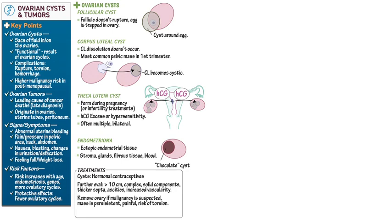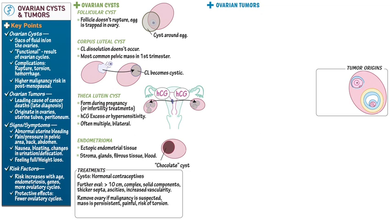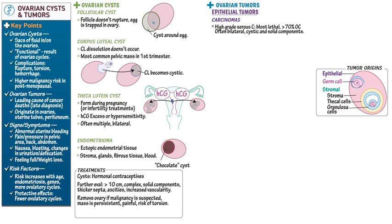Ovarian tumors are classified according to their cell type of origin: epithelial cells on the surface of the ovary, germ cells (oocytes), or stromal cells including the ovarian stroma, thecal cells, and granulosa cells. Key epithelial carcinomas include high-grade serous carcinoma, which is the most lethal and most common form, accounting for more than 70% of ovarian cancers. High-grade serous carcinoma often originates from epithelial cells in the uterine tubes and is often bilateral with both cystic and solid components.